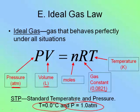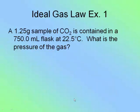So, let's use this law in an actual example problem. A 1.25 gram sample of CO2 is contained in a 750 milliliter flask at 22.5 degrees Celsius. What is the pressure of the gas?